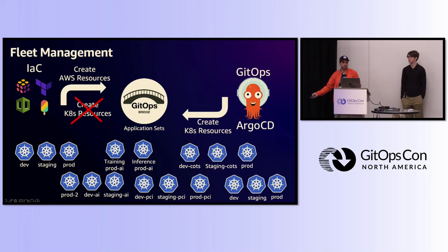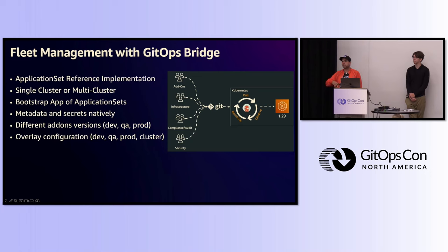The GitOps bridge demonstrates the benefits of using Application Sets. You can have single-cluster or multi-cluster setups. You can bootstrap using apps of Application Sets rather than apps of apps. The metadata and secrets you need are handled natively, without an Argo CD plugin — using generators like the cluster generator or the Git generator.